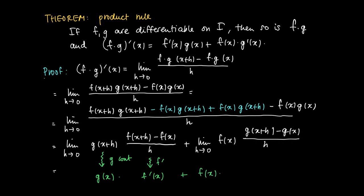So we get g of x times f prime x. And something similar holds on the second term. We take out the constant fx and the remainder goes to g prime of x. So this gives us the product rule.